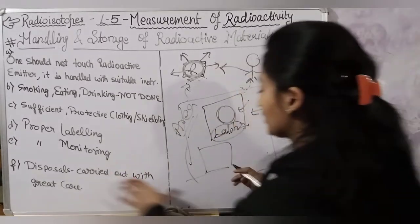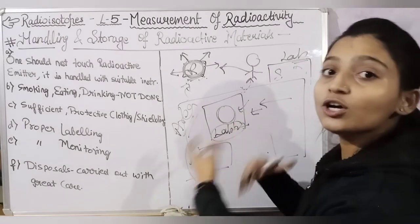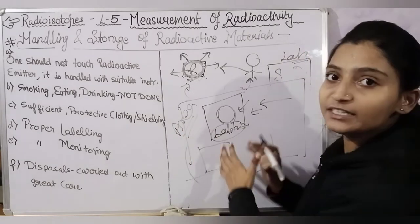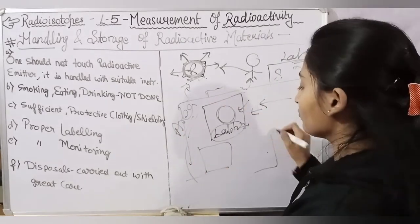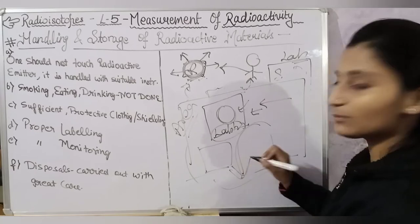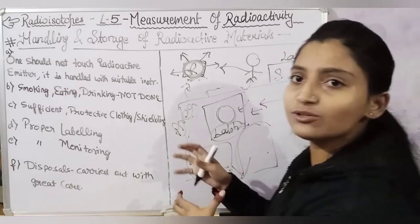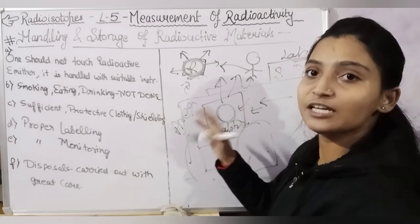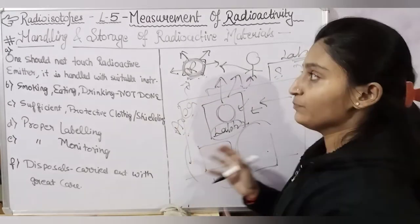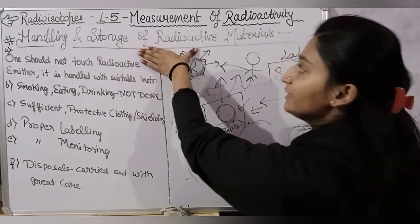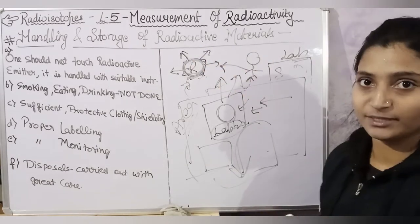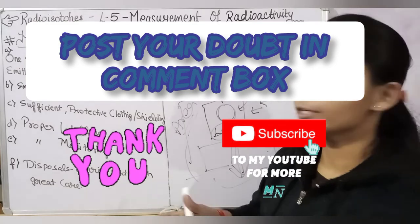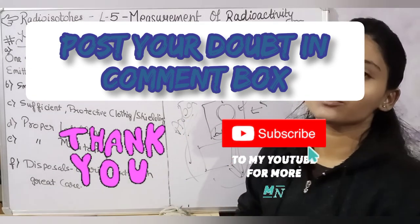Then we have to go to disposal. If we are using radioactive materials, we should also be disposing of them properly using particular methods, so that the radioactive reactions will not affect others. This covers the handling of radioactive elements. If you have any query, please comment in the box. Thank you very much for watching this video.